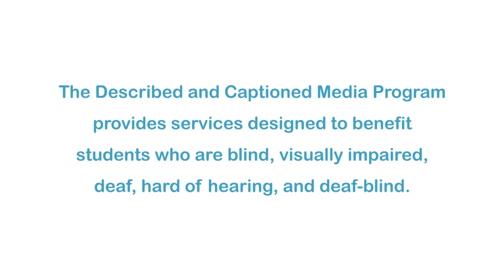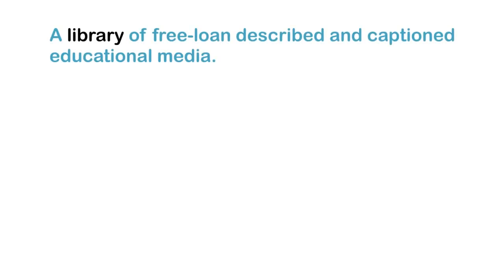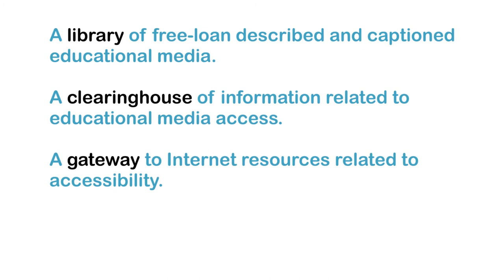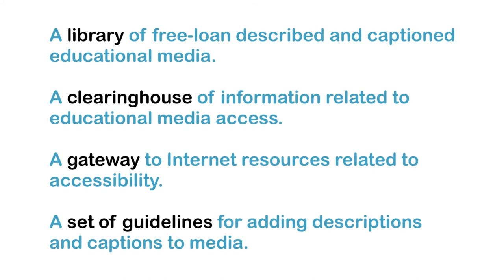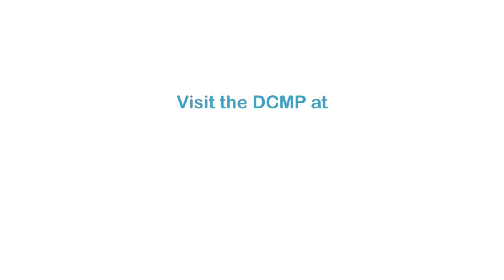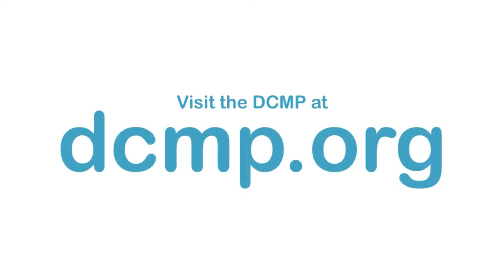The Described in Caption Media Program provides services designed to benefit students who are blind, visually impaired, deaf, hard of hearing, and deafblind. These services include a library of free loan described and captioned educational media, a clearinghouse of information related to educational media access, a gateway to Internet resources related to accessibility, and a set of guidelines for adding descriptions and captions to media. There are no user registration or service fees. Visit the DCMP at DCMP.org.